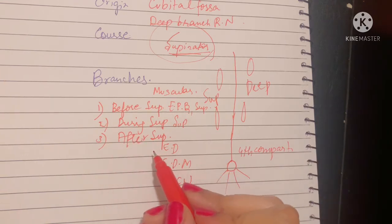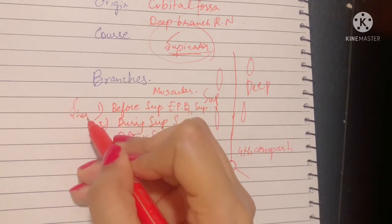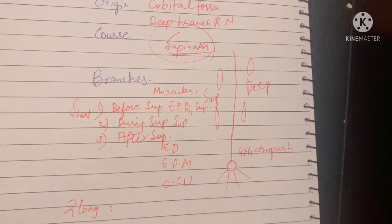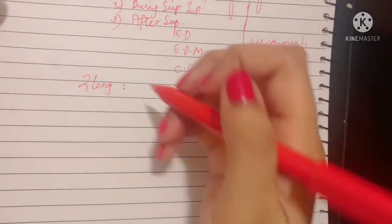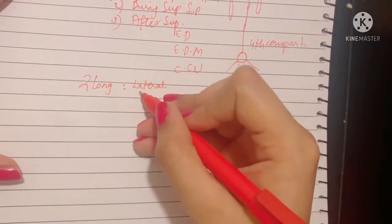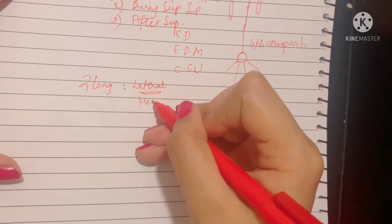Apart from this, these were short branches. It also gives some long branches, which are two in number. These long branches are lateral and medial. The posterior interosseous nerve has to supply all the muscles of the back of the forearm.